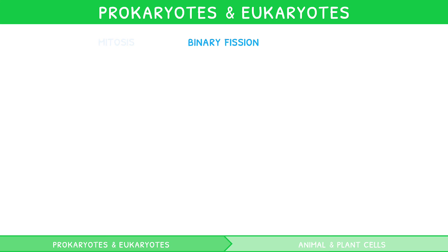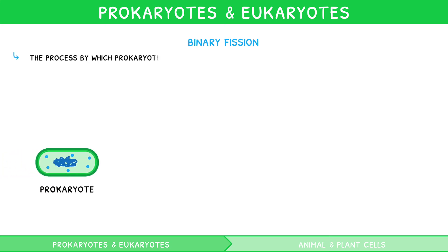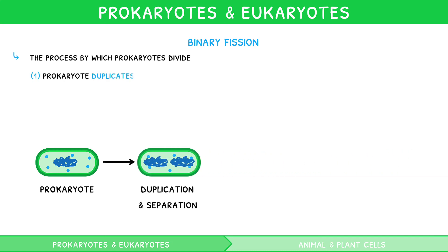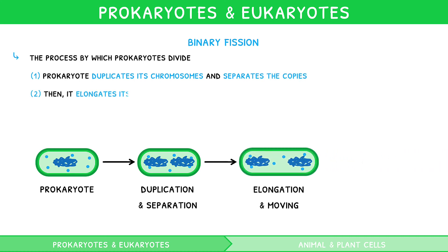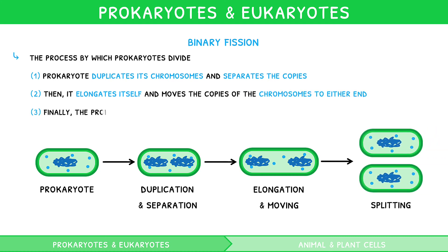Binary fission is the process by which prokaryotes divide. It is very briefly covered in the IB and is a simple three-stage process. The first stage is that the prokaryote duplicates its chromosomes and separates the copies. Then it elongates itself and moves the copies of chromosomes to either end. Finally, the prokaryotic cell splits into two. It's that simple.